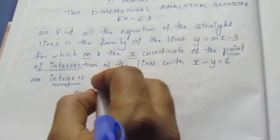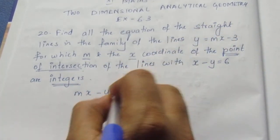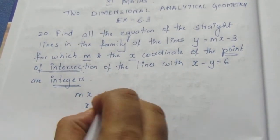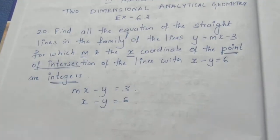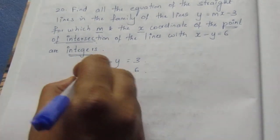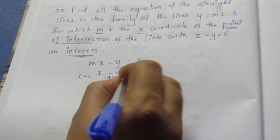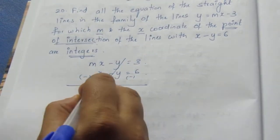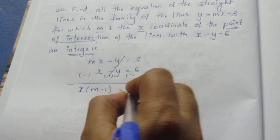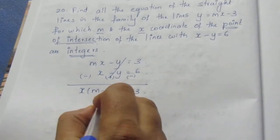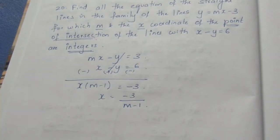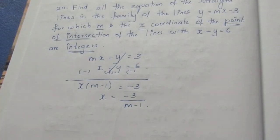We have two equations: mx - y = 3, and x - y = 6. Using elimination by subtracting, we get x = -3/(m - 1).